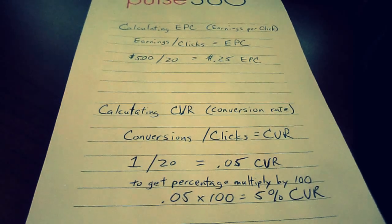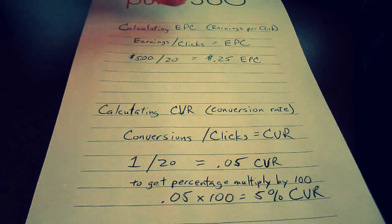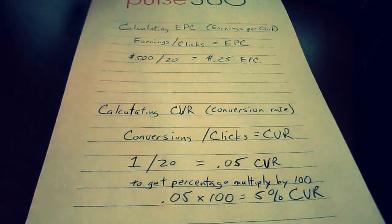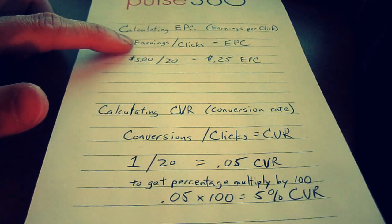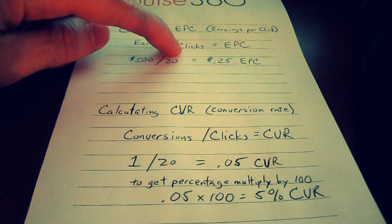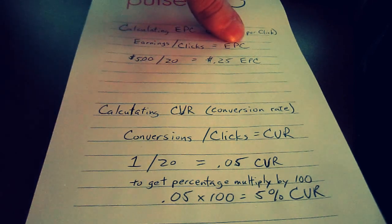This is going to seem basic for a lot of people, however there's still confusion, so I thought I'd break it down here. If you're going to calculate your EPC, or your earnings per click, you take your total earnings, divide it by the number of clicks, and that will equal your EPC.